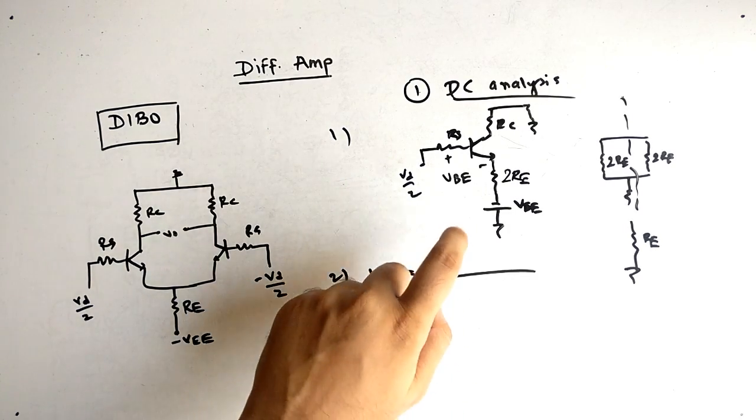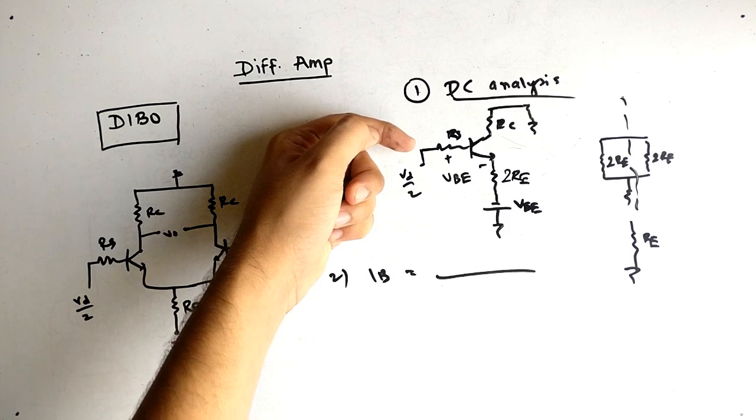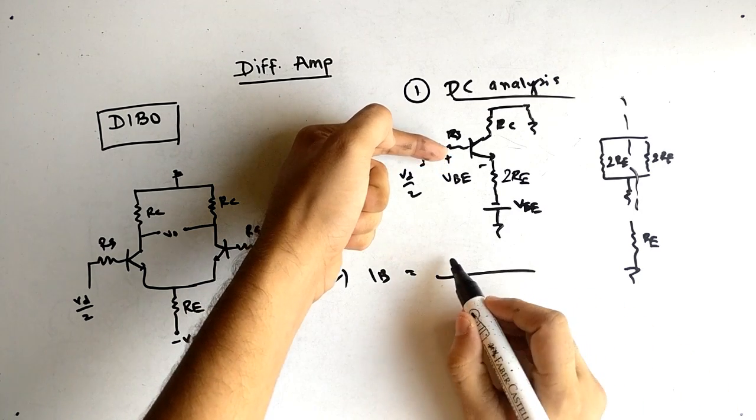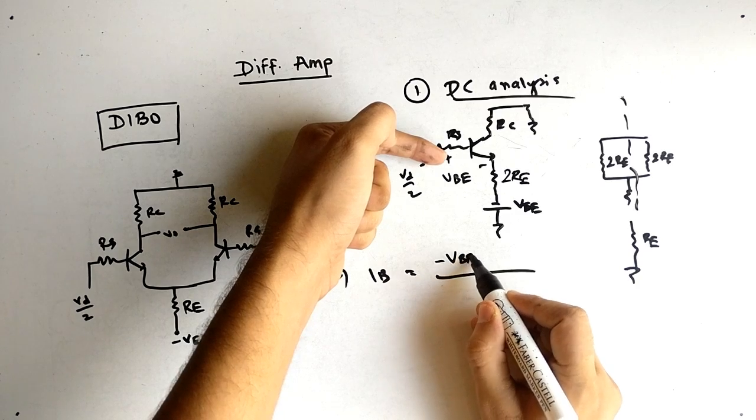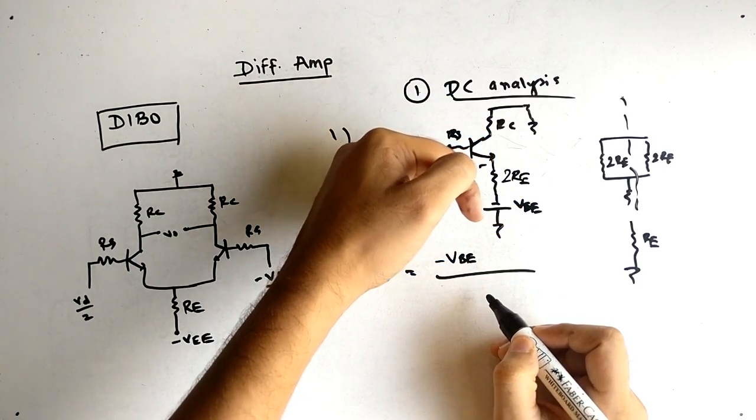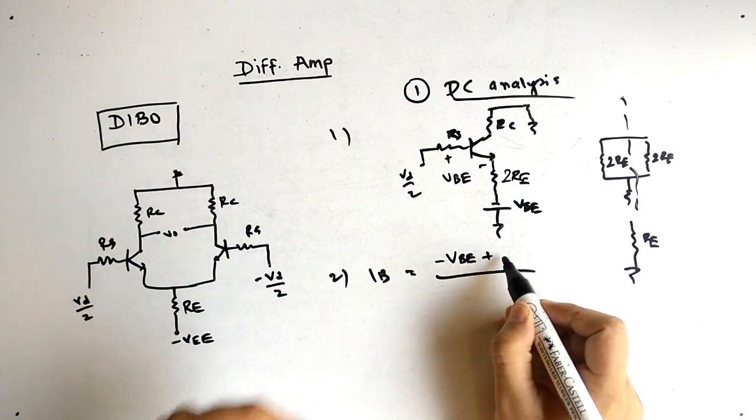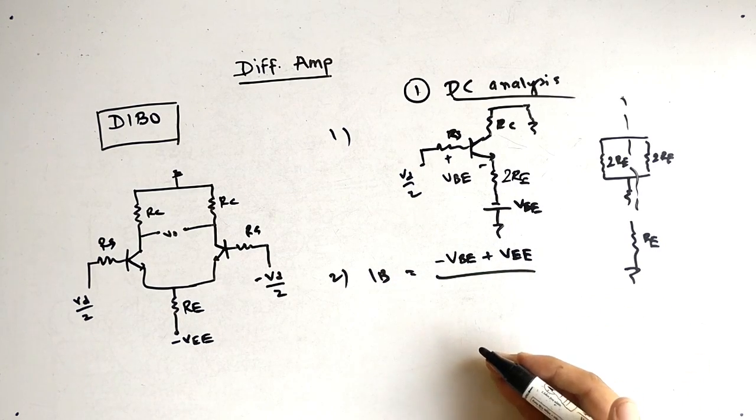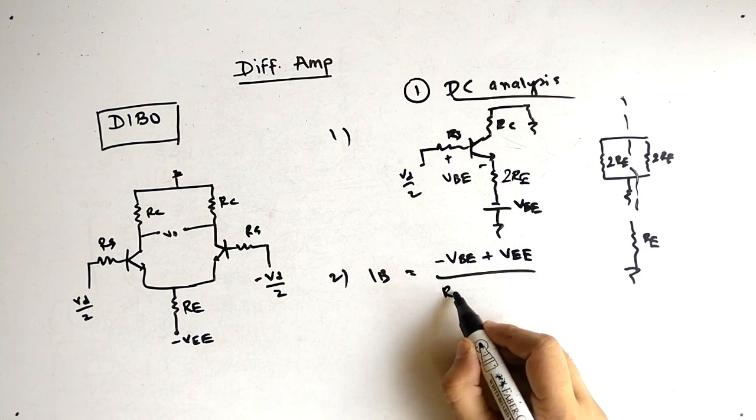So what you can do is you need IB. I is always equal to V by R. Now in the upper side you have to write voltage. So what will be the voltage? Let's see. First you know that we have the VBE, so taking the second sign minus VBE. Then we have VEE, taking the second sign plus VEE. So voltage part is clear.